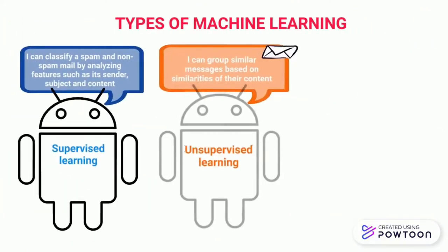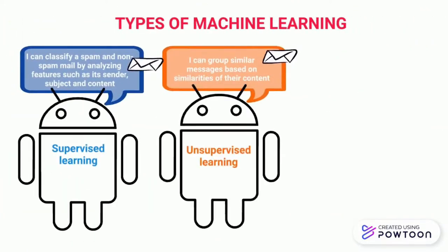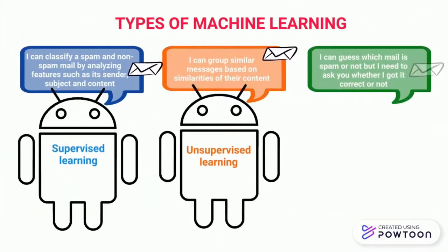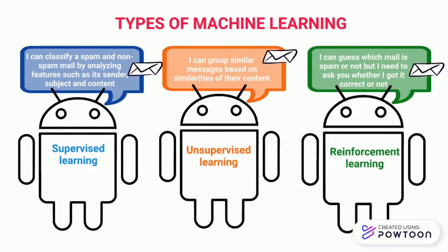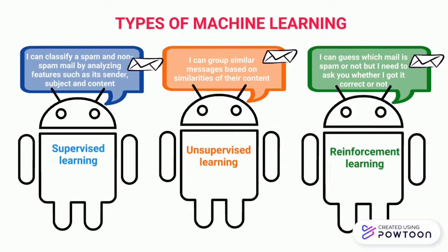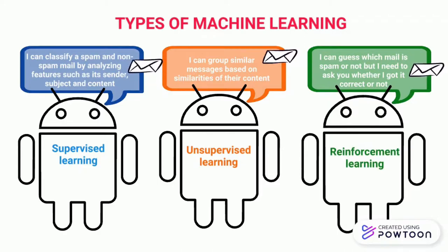Machine learning can be categorized into supervised, unsupervised, and reinforcement learning. They are differentiated based on their technique to understand the task.